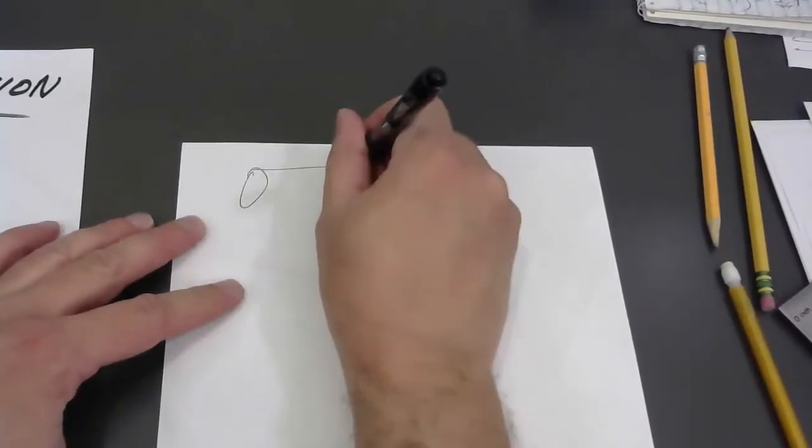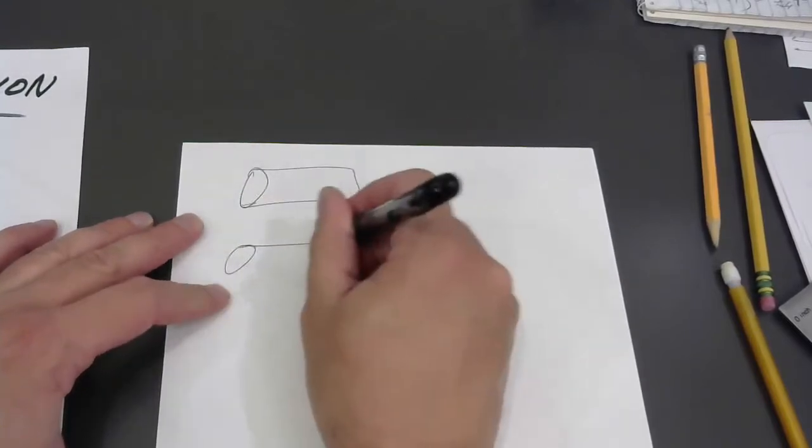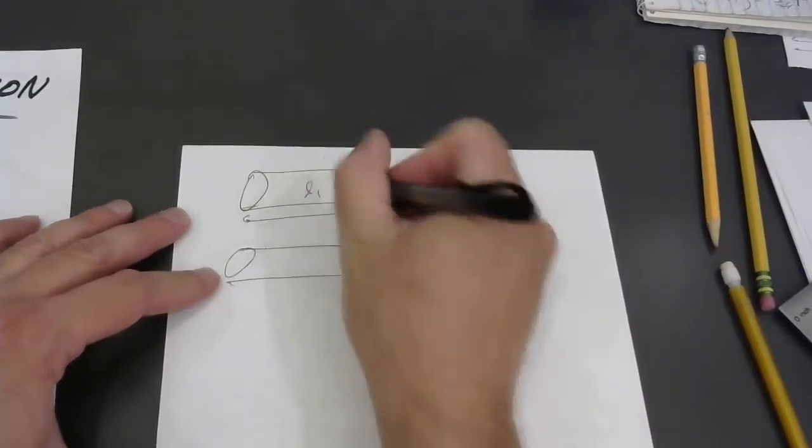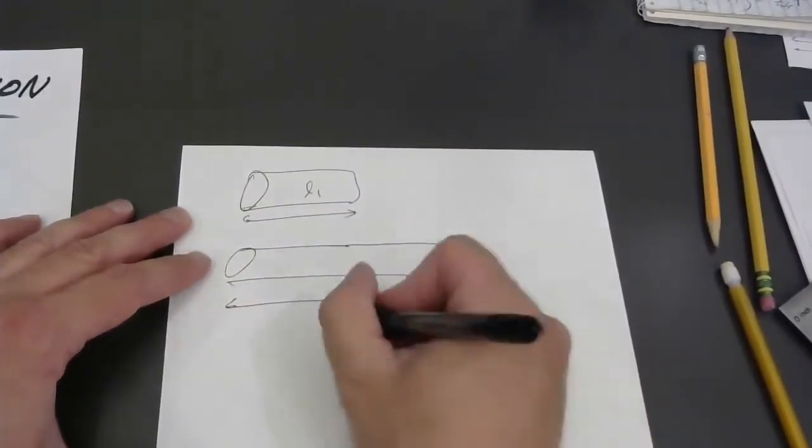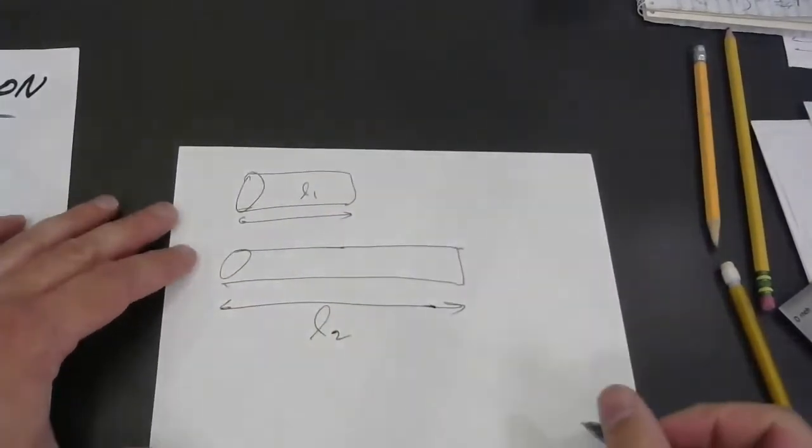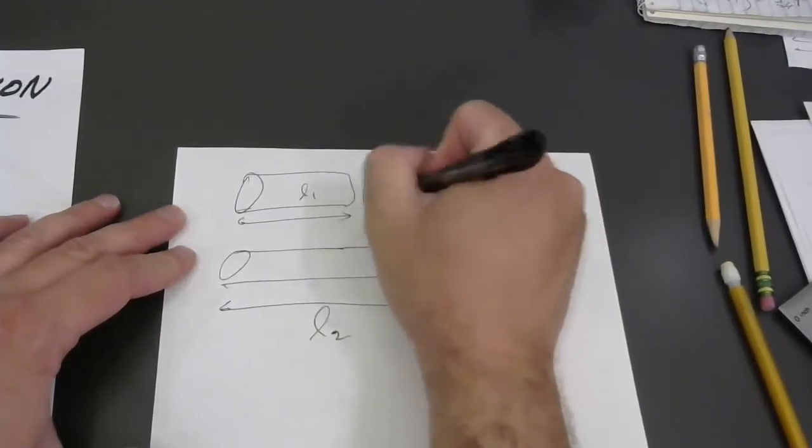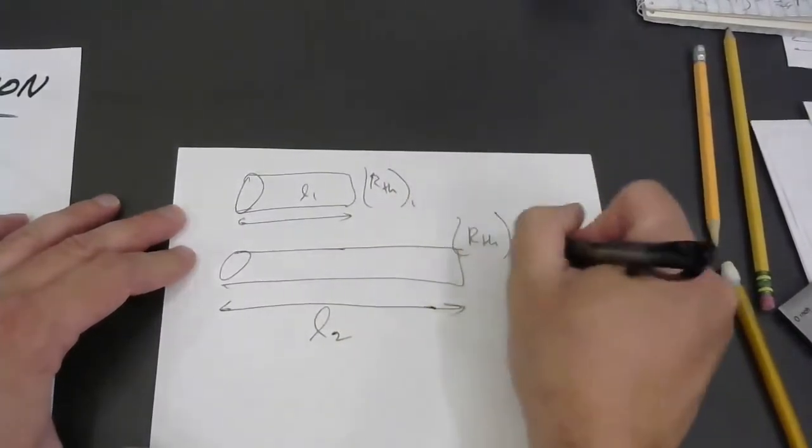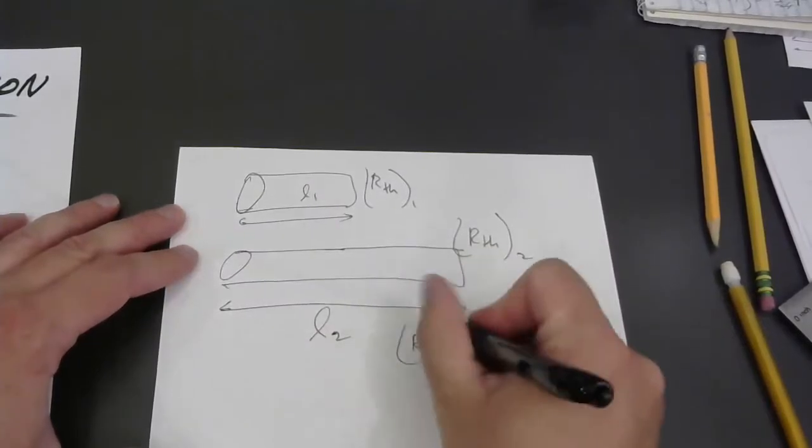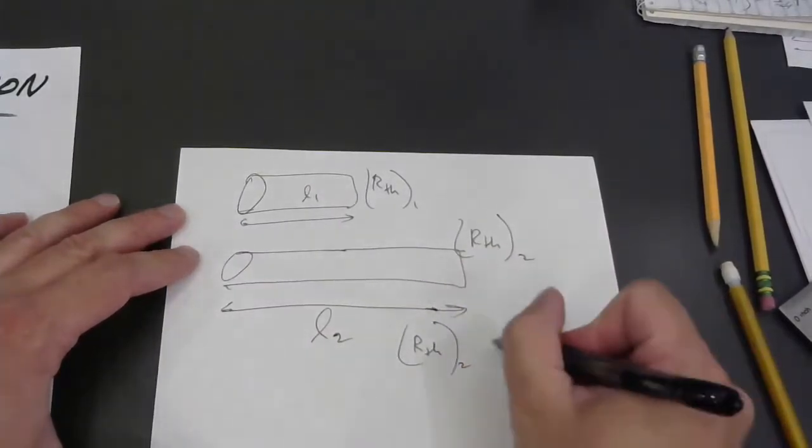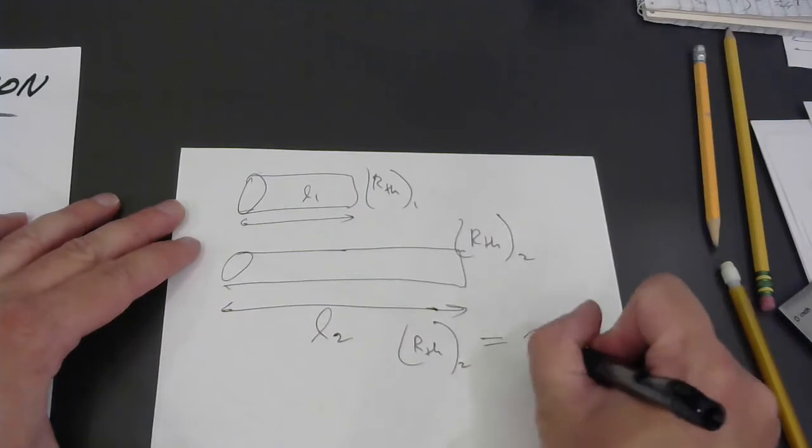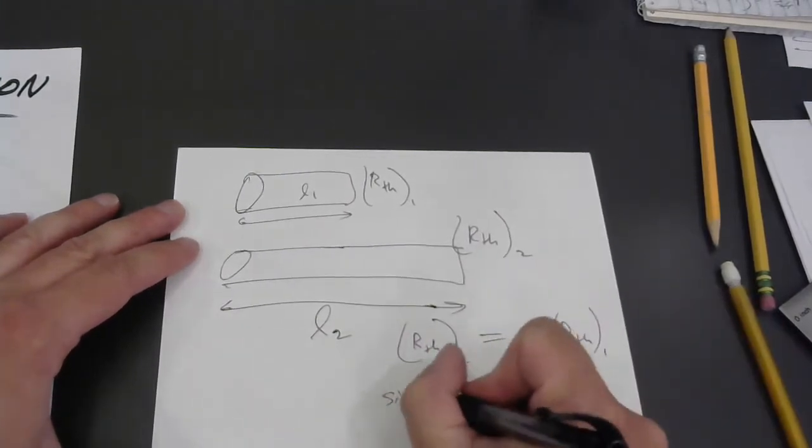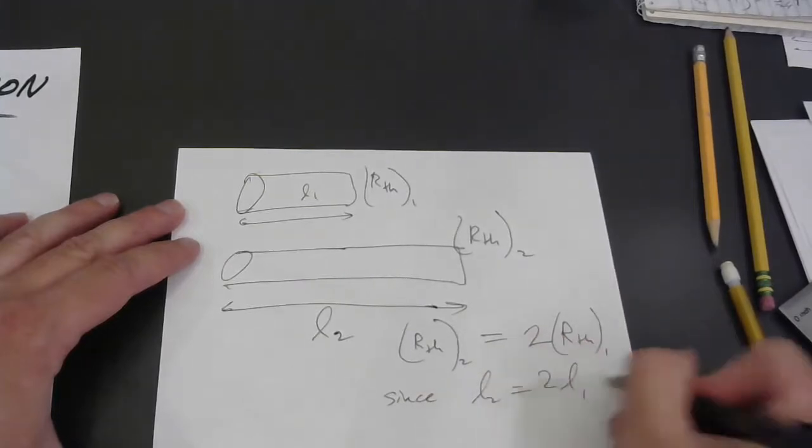And then the other thing we have to worry about would be the length. So if we're talking about equal cross-sections, I'll call this length L1. Here's L2. This has some thermal resistance, which I'll call R thermal 1. And this is R thermal 2. The thermal resistance of object two is probably going to be double that of object one, since L2 is double L1.